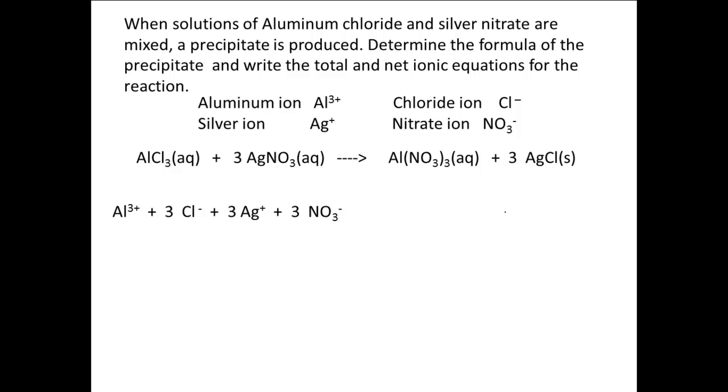The Al(NO3)3 will break up into one Al3+ ion and three NO3- ions. The three AgCl will not break up because it is a solid. This is the total ionic equation.